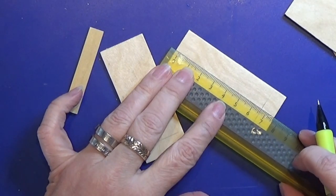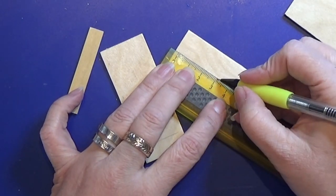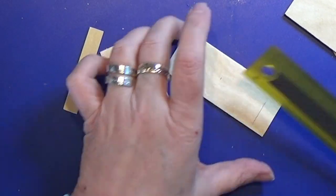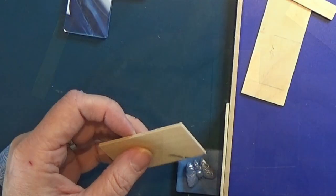Before I glue it together I'm going to make a line where I want my shelf in the middle. Remember to make the line on both side pieces.